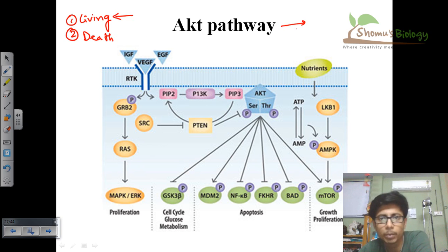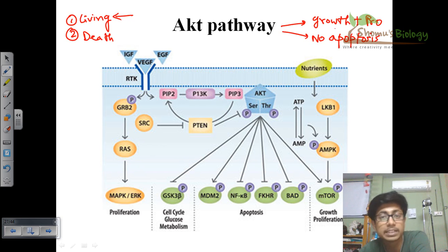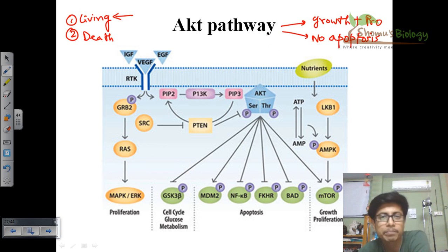AKT pathway serves two important functions. One is cell growth and proliferation. Alongside, it also helps the cell not to undergo apoptosis — so it prevents apoptosis from occurring. These are the two important features provided by the AKT pathway inside the cell.